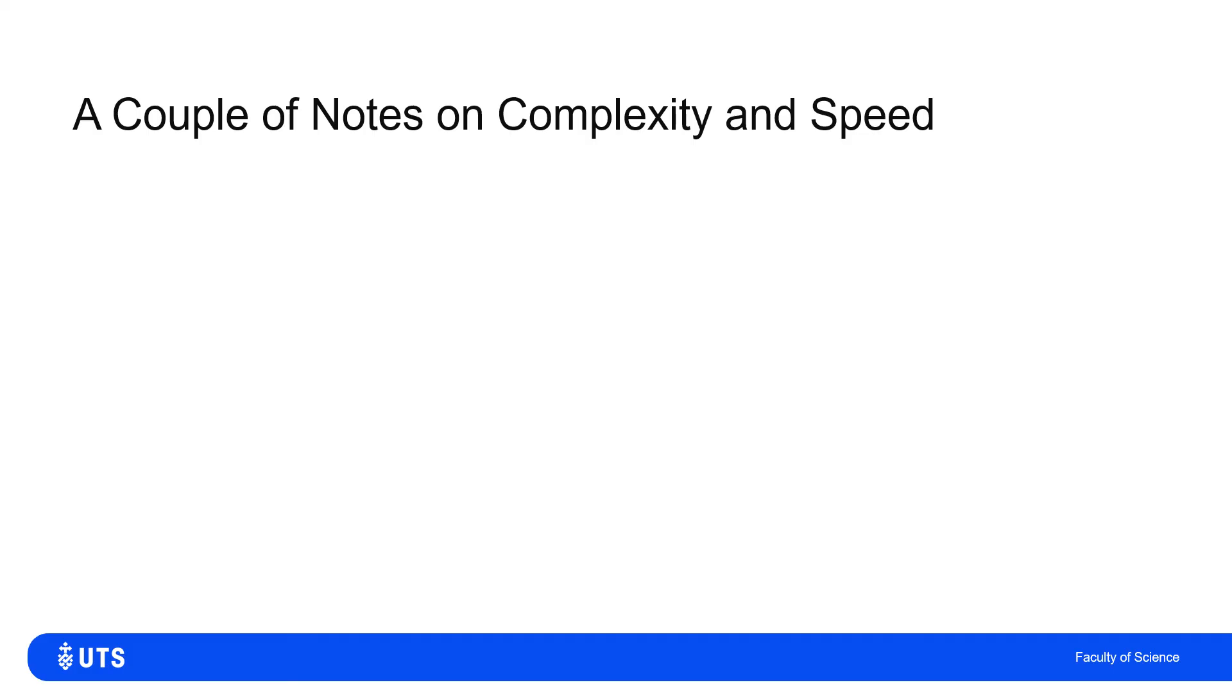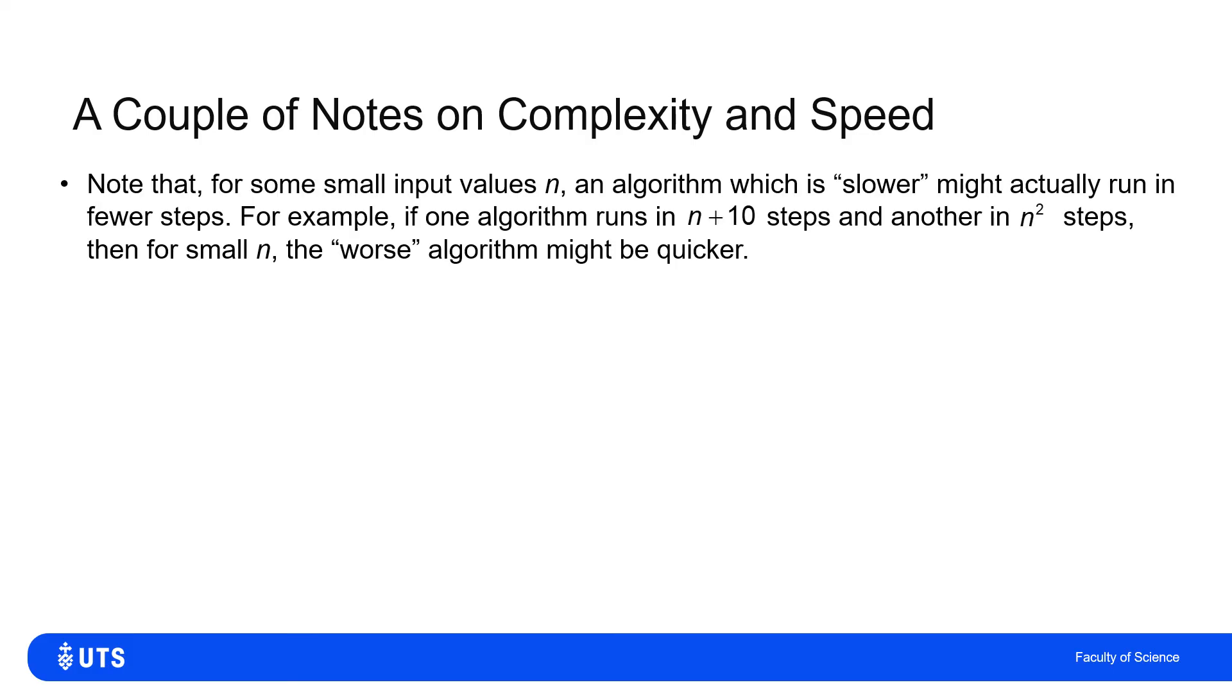Just a couple of final notes on complexity and speed. And that's that I will tend to think of what happens in the long run, because I may have one algorithm which is very efficient for large values, which is fractionally slower for small ones, but I'll tend not to worry. Because if, for example, one algorithm with an input of n takes n plus 10 steps to reach its conclusion, and the other takes n squared, then n squared, if n is 1 or 2, will be smaller, fewer steps than n plus 10. But in the long run, if n gets bigger and bigger,